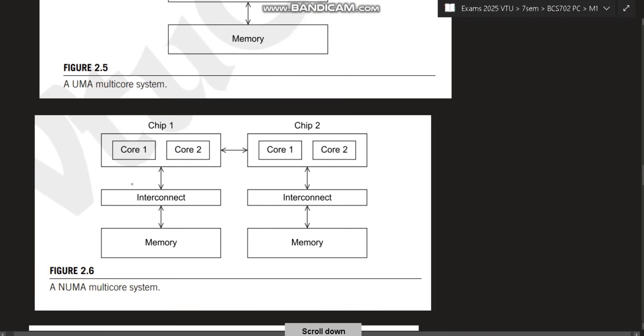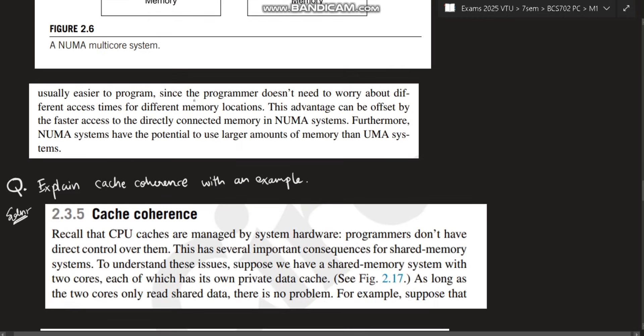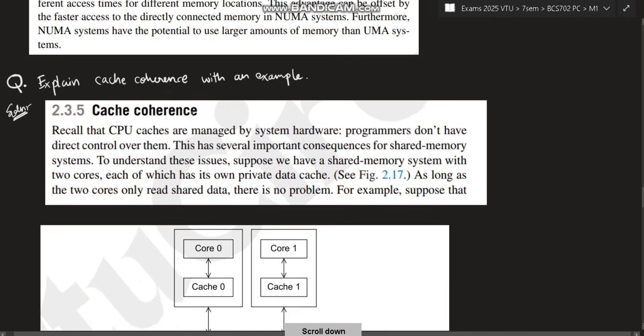Second one is non-uniform memory access. This means all the data is not being taken from memory, but the data can be exchanged between the chips also. So it will be more faster, the NUMA multi-core system.